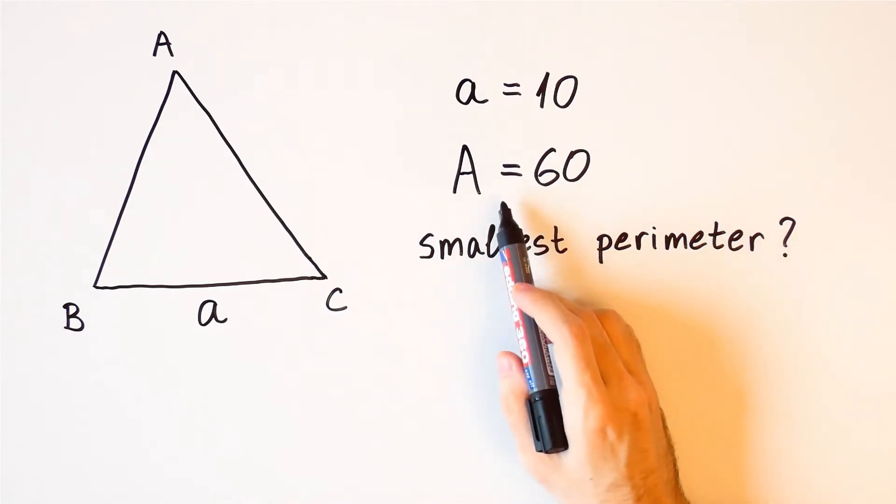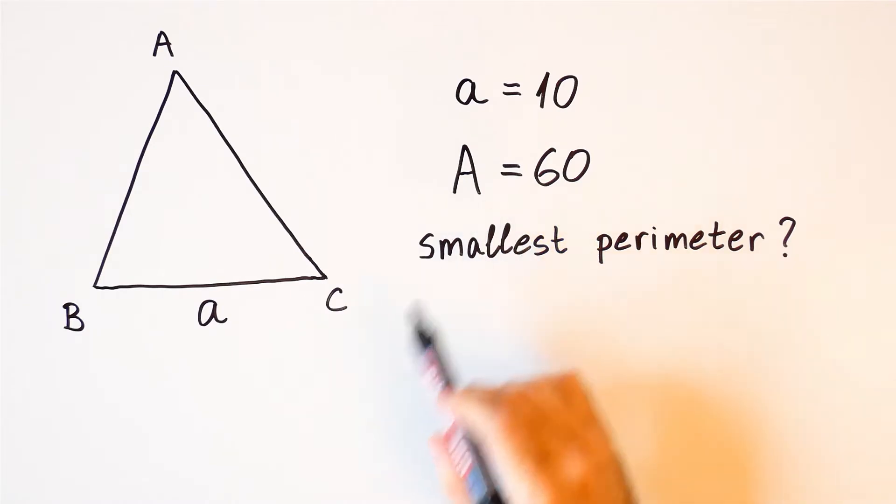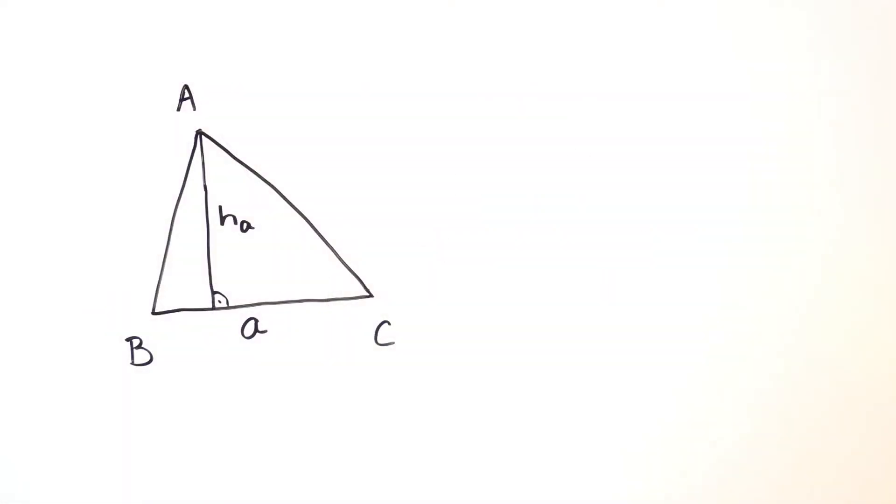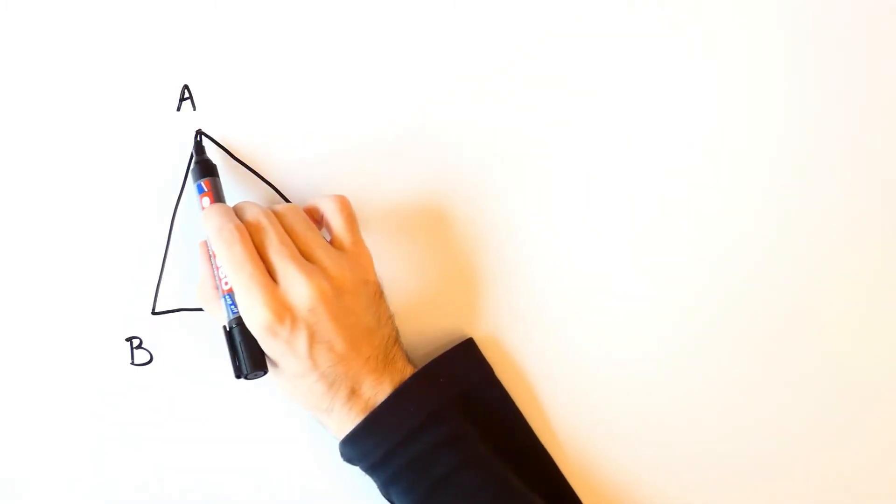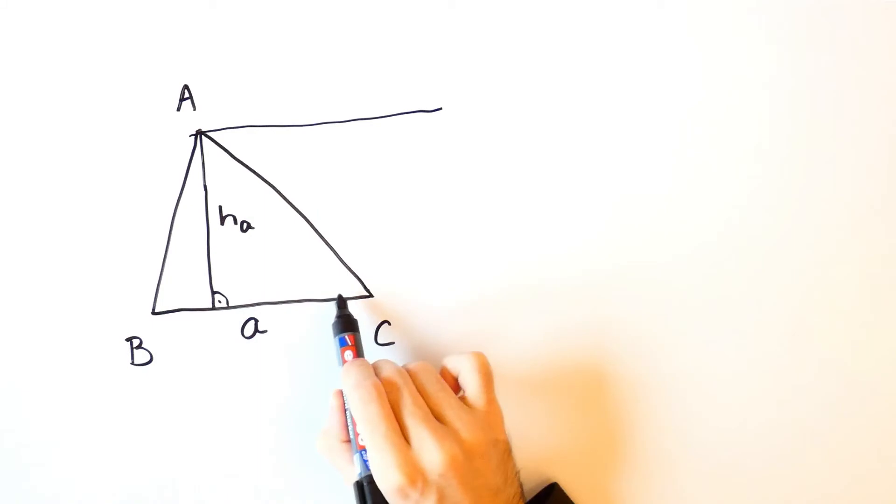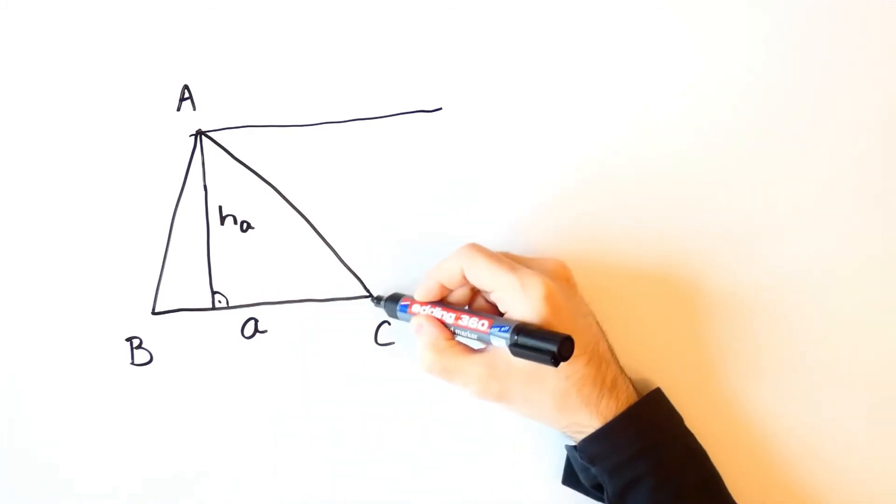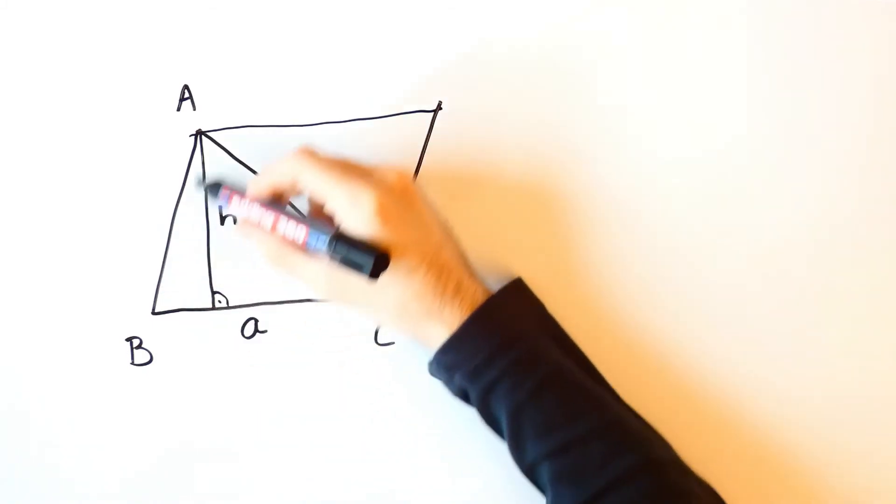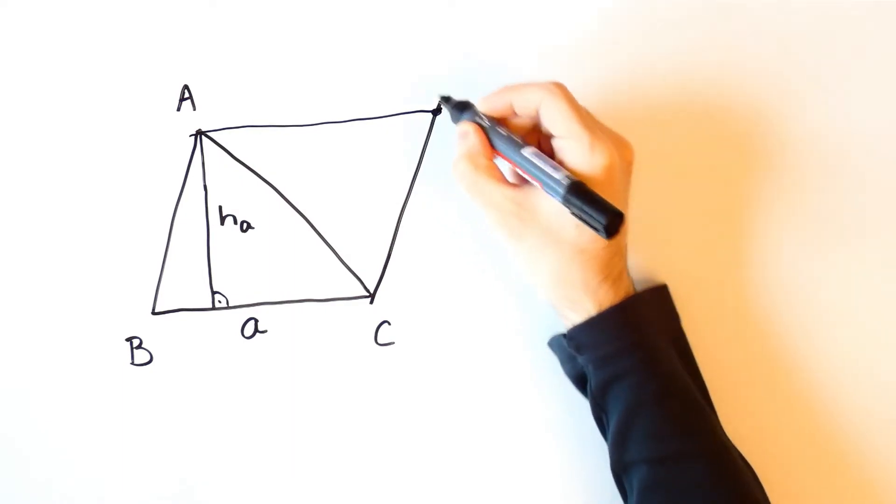To use the fact that the area is 60, we'll first derive the formula for the area of a triangle. Let's draw a line that passes through A which is parallel to BC and a line that passes through C that is parallel to AB. And let's denote their intersection by D.